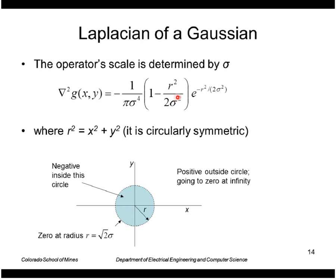At locations of r near zero, it's negative. The operator is zero where r is equal to square root of two times sigma, and then for r greater than that, it's positive and eventually goes to zero at infinity.